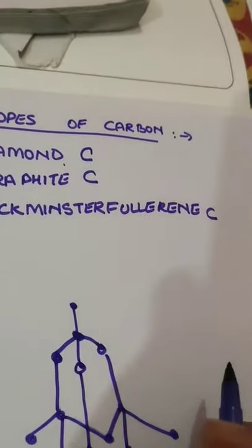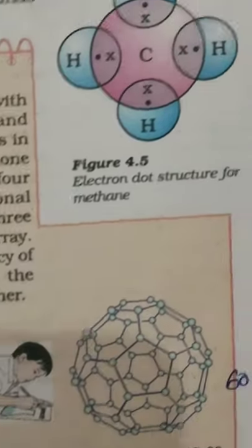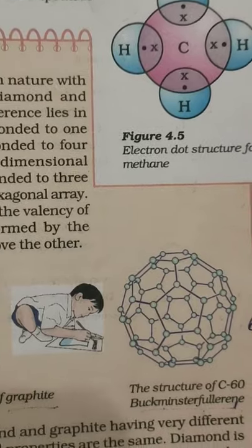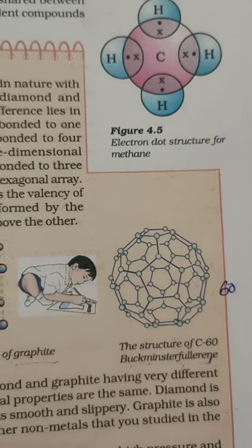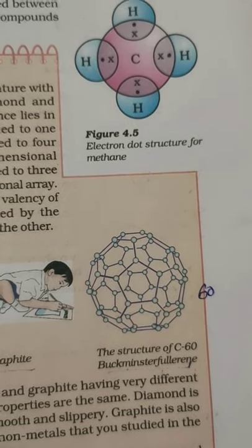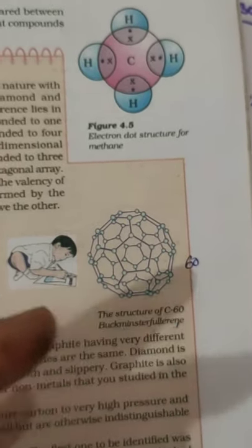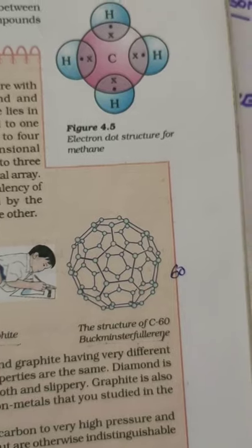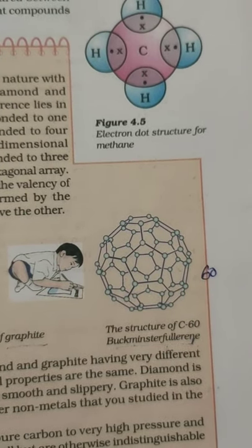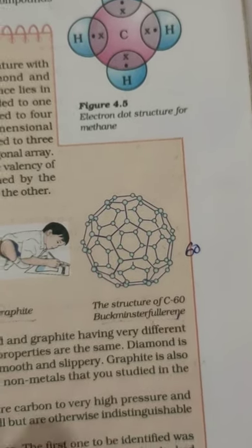Buckminster fullerene has a ball-like structure made of 60 carbon atoms joined together to form a spherical molecule, so it is also called C₆₀. It has a round football shape in which the molecules are arranged in interlocking hexagonal and pentagonal rings of carbon atoms.